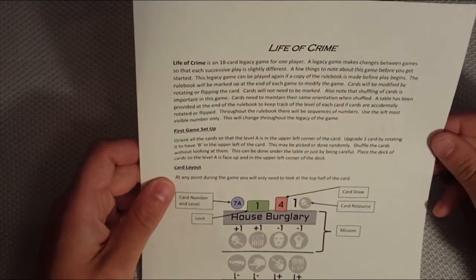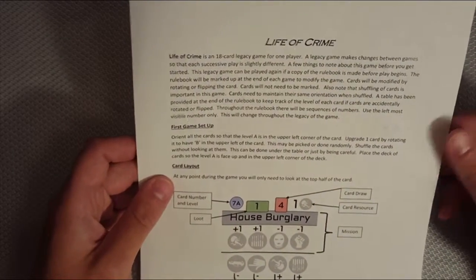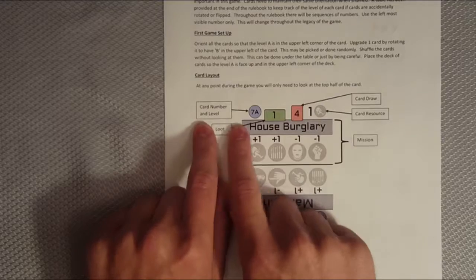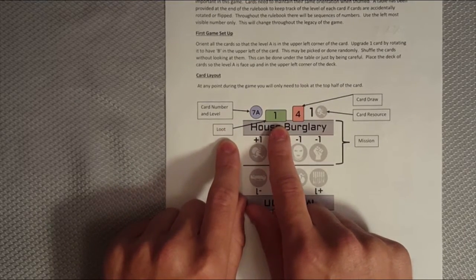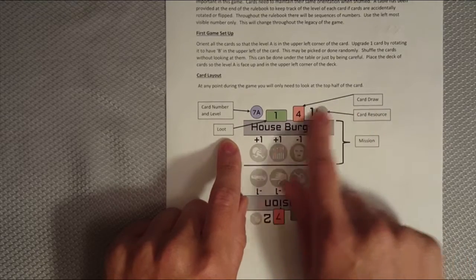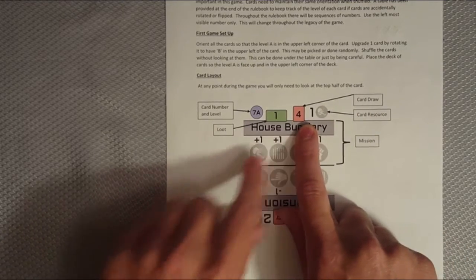Welcome to Life of Crime. Life of Crime is an 18-card legacy game for one player. Let's take a look at the basic layout of the card. We have the blue circle, a card number and level. In the green box, we have the loot. I want to get that card draw number in the red box there. That's basically the difficulty of the mission.